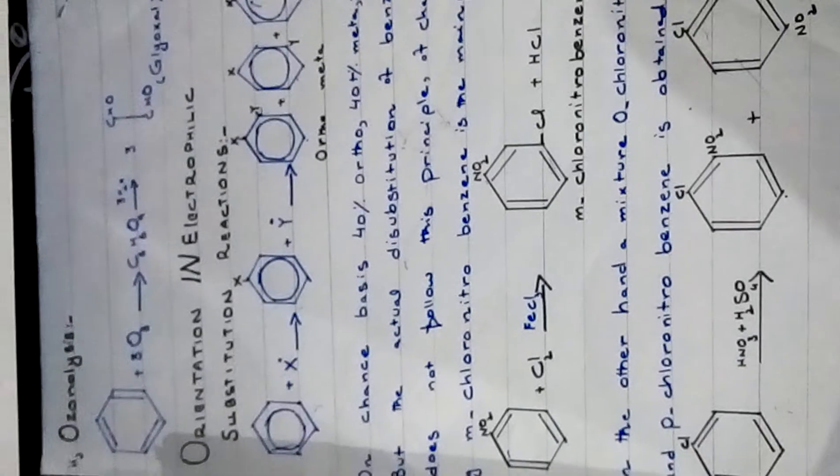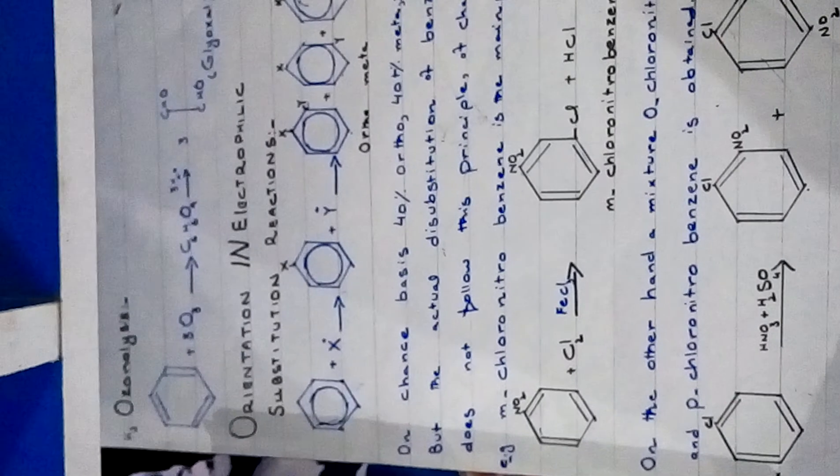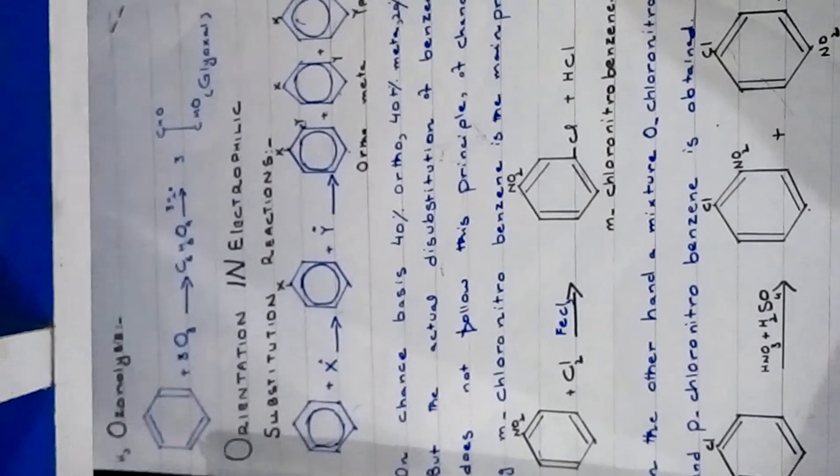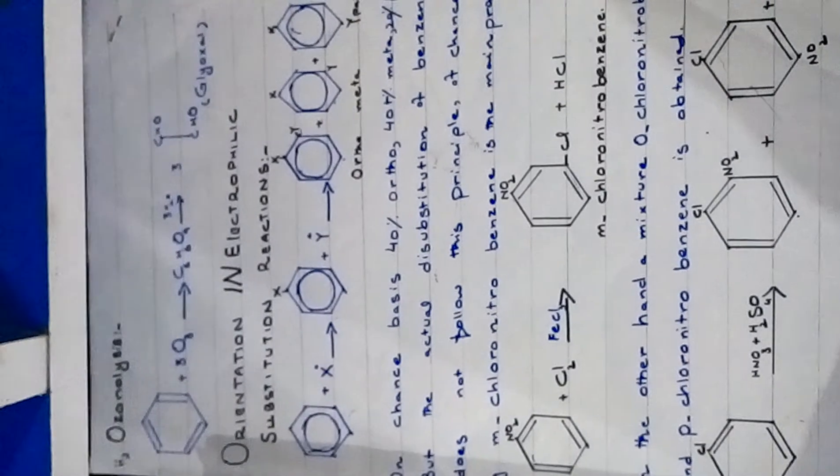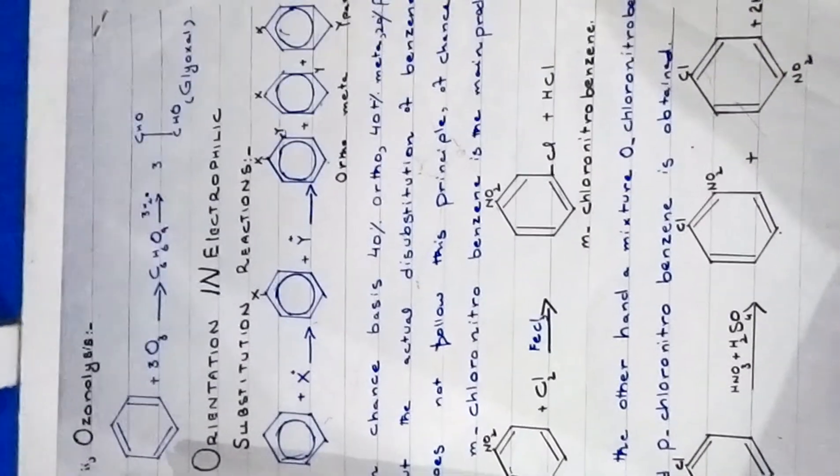We will continue our topic of orientation on the basis of chance. This is 40% ortho, 40% meta, and 20% para. Disubstituted products are expected. This is the percentage of attachment of new incoming groups on ortho, para, and meta positions.